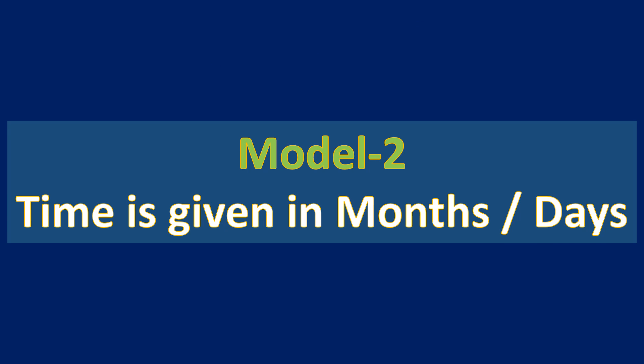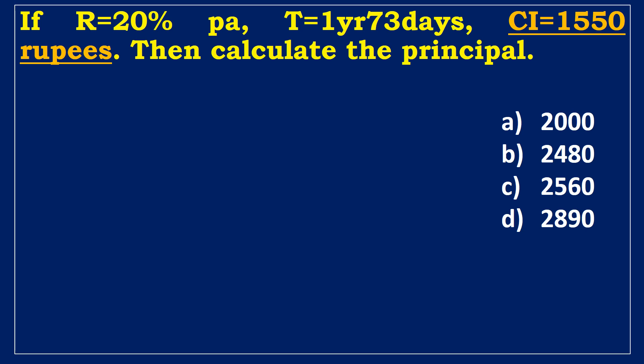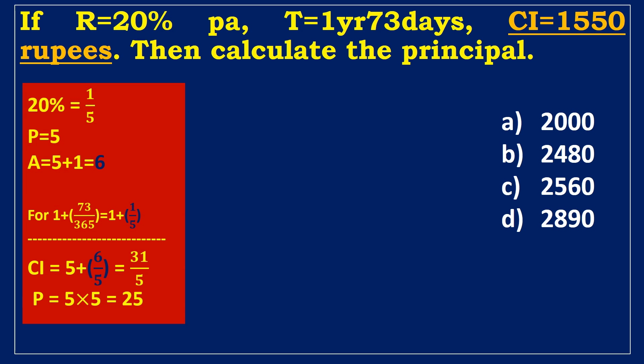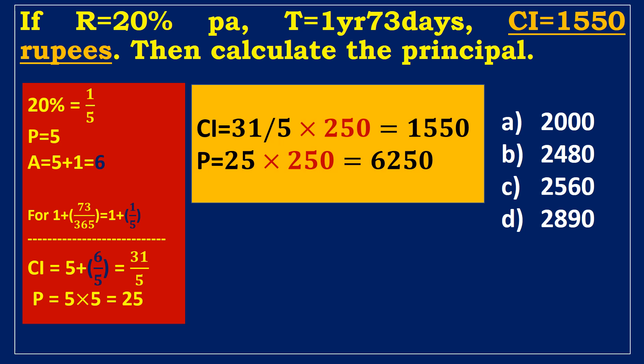Model 2: Time is given in months or days. If rate = 20% per annum, time = 1 year 73 days, and CI = 1550 rupees, calculate the principal. Given: 20% = 1/5, so principal is 5 and amount is 6. Time of 1 year 73 days is represented as 1 + 1/5. The compound interest is the sum of principal and amount for 73 days, which is 5 + 6/5 = 31/5. Principal for two years = 5² = 25. Since (31/5) × 250 = 1550, the multiplier is 250. Required principal = 250 × 25 = 6250 rupees.